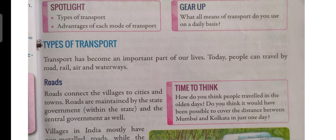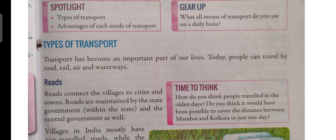Now let us read about types of transport. Transport has become an important part of our lives. Today, people can travel by road, rail, air and waterways. Due to these different types of transport, the distance between different places has become very less. For example, if I want to go from Ranchi to Mumbai in just one day, I can book a flight and reach Mumbai the same day.